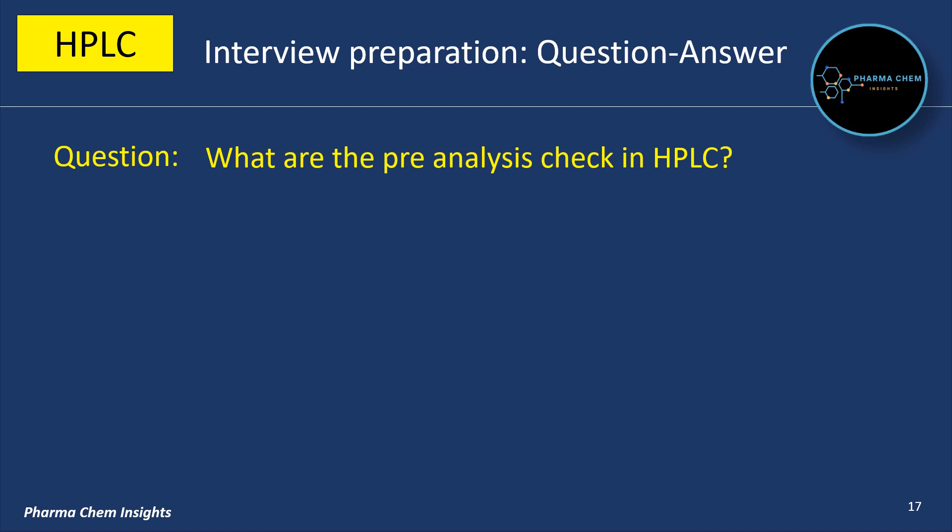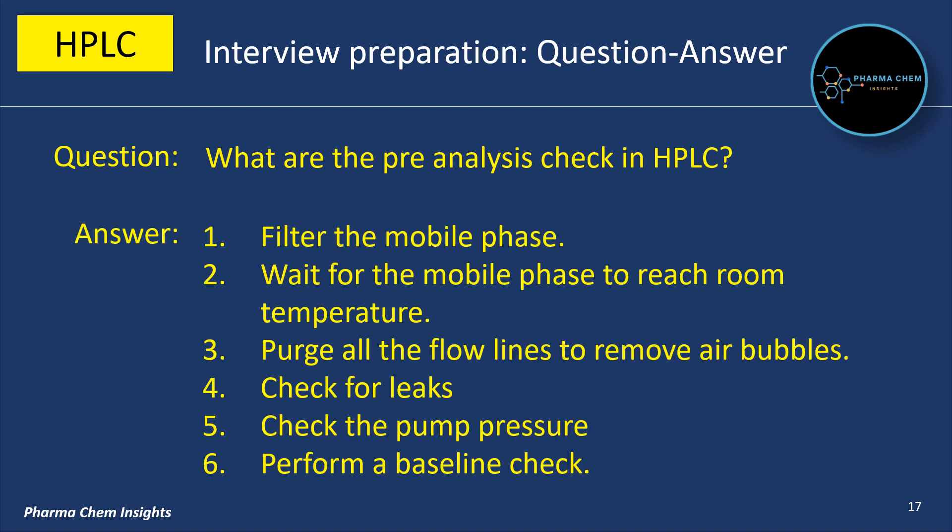What are the pre-analysis checks in HPLC? Before starting the analysis, you should: first, filter the mobile phase; second, wait for the mobile phase to reach room temperature; third, purge all the flow lines to remove air bubbles; fourth, check for leaks in the system; fifth, check the pump pressure; sixth, perform a baseline check.